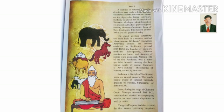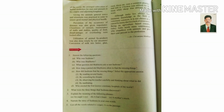This made people aware of surgical methods, dressing of wounds, bandaging of fractures, etc. Later, during the reign of Chandragupta around 300 BC, veterinarians started accompanying armies to treat horses, elephants, as well as cattle. The great emperor Ashoka erected the first known veterinary hospital of the world. He arranged cultivation of herbal medicines for men and animals in his empire and adjoining kingdoms.